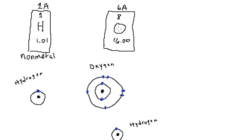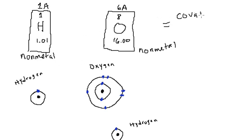Oxygen is on the right-hand side of the periodic table, so for a fact, oxygen is a non-metal. So what happens when we have two non-metals? When we have two non-metals being paired, we have a covalent bond. Covalent bonding occurs between two non-metals, and what's going to happen is that they're going to share the electrons.